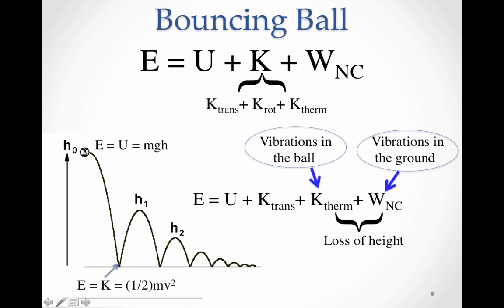To start off with, it's easy to see that the total energy in the system is all potential energy because we've raised this ball with a particular mass up in a gravitational field to a particular height. As it falls it gains speed, and all of this potential energy translates into kinetic energy the instant before it bounces. This part was like our conservative model before the ball hit.